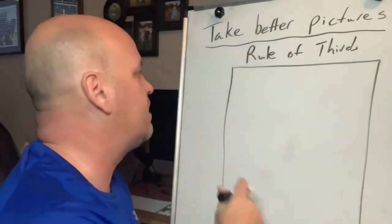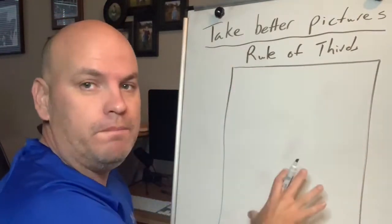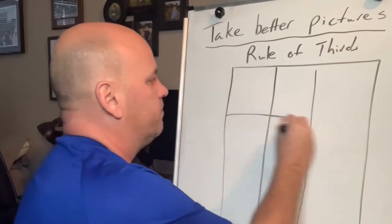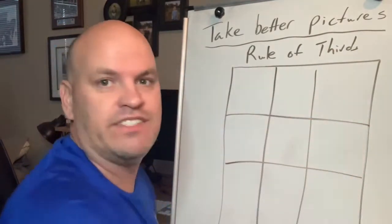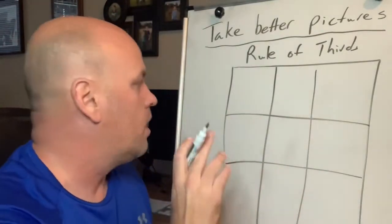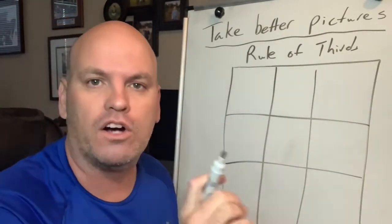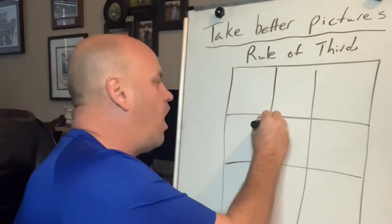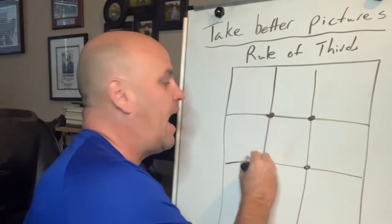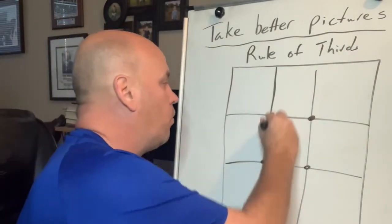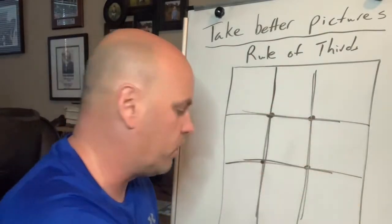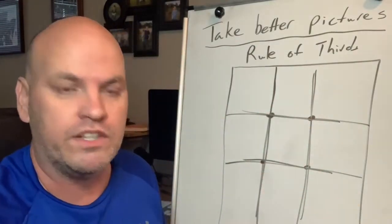The rule of thirds says you take your photo and basically draw a tic-tac-toe board — we all know tic-tac-toe. The idea is that your most important parts of the photo are on one of these points or on these lines. You want to have your subject, the most important part of the photo, on one of those things.